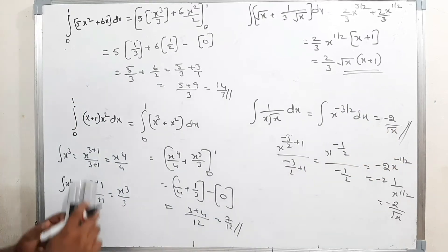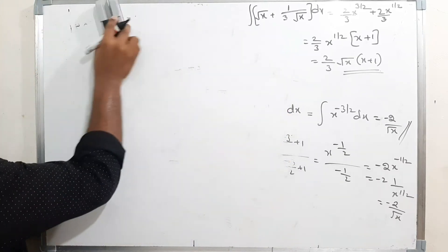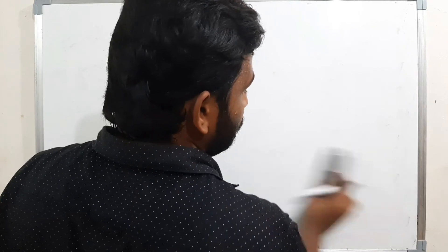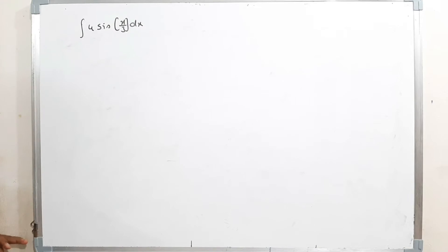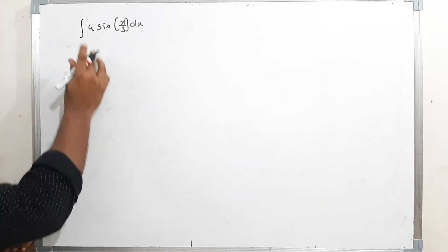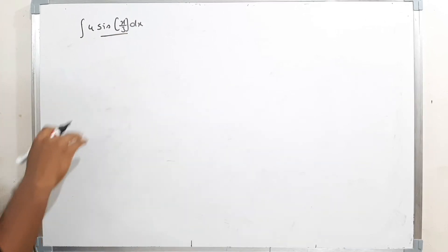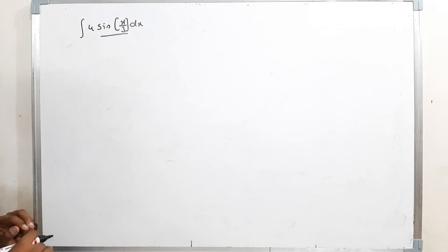Now we will see a few more examples. The next problem: integration of 4·sin(x/3) dx. Since 4 is a constant it comes outside. We need to find the integration of sin(x/3).